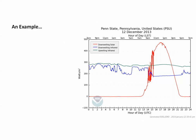Here's an example. This graph is from Penn State University on December 12, 2013. The red curve shows downwelling solar radiation — that's incoming solar radiation coming to the ground and being absorbed. The blue curve shows downwelling infrared radiation, which is radiation coming into the earth from clouds and visible gases in the atmosphere. The green curve shows upwelling infrared radiation, which is radiation being emitted from the earth. To find net gain or loss of radiation, we take absorbed radiation and subtract emitted radiation.